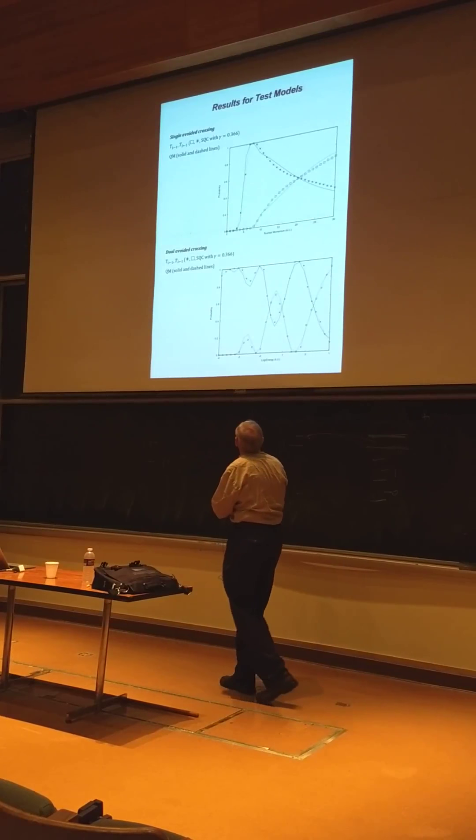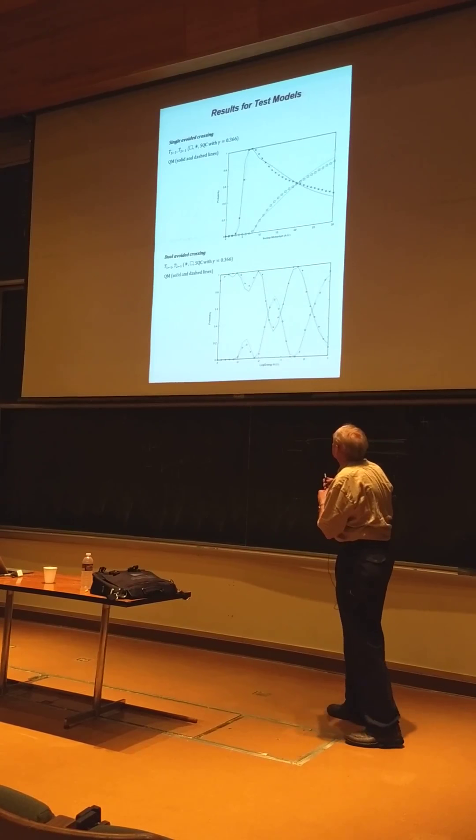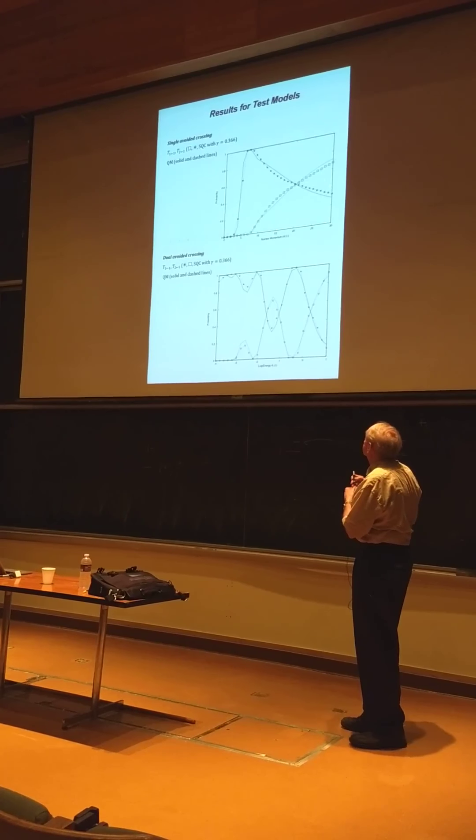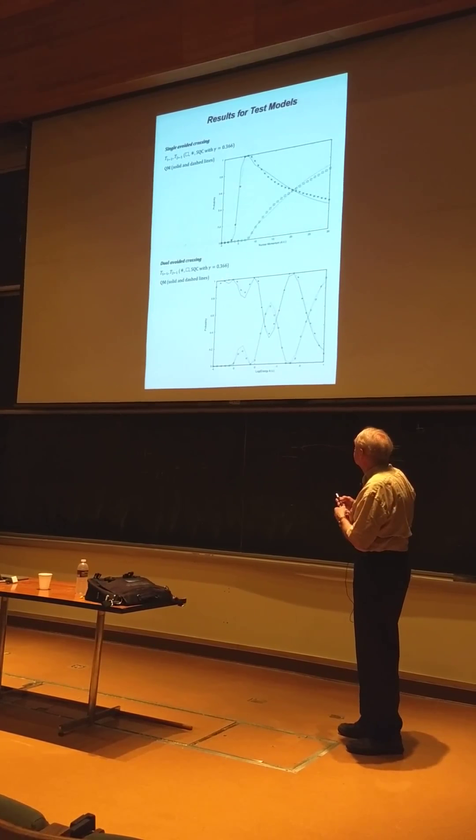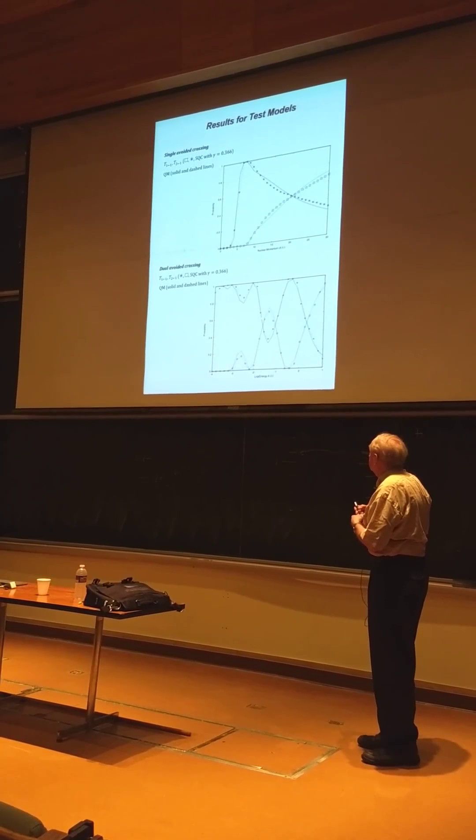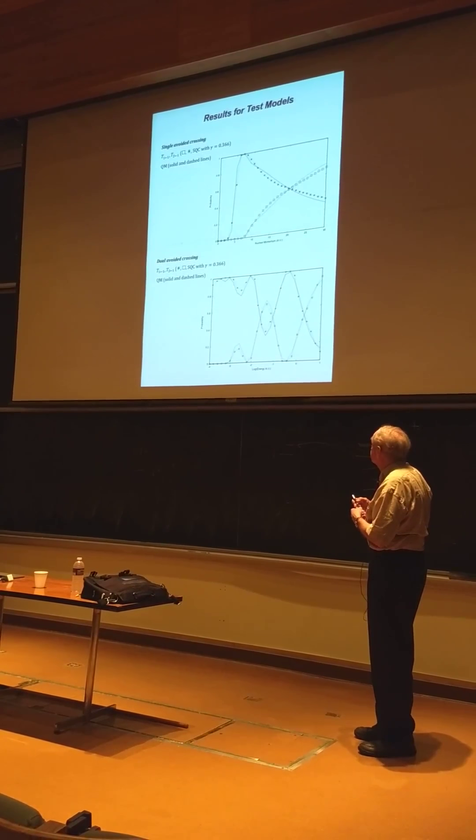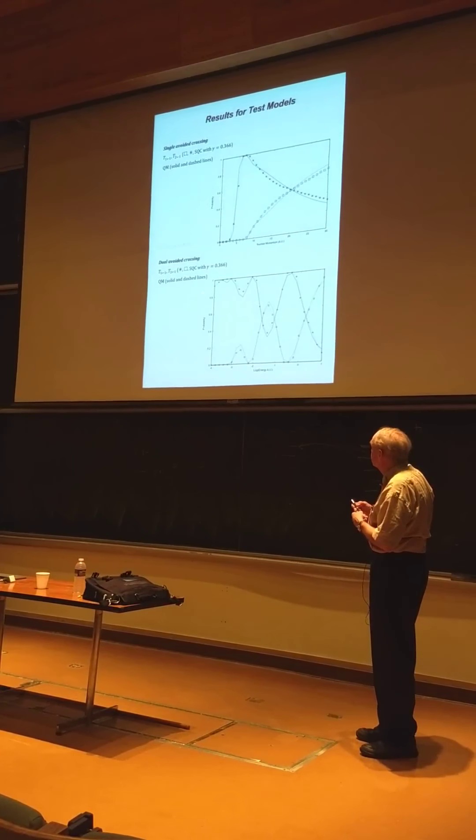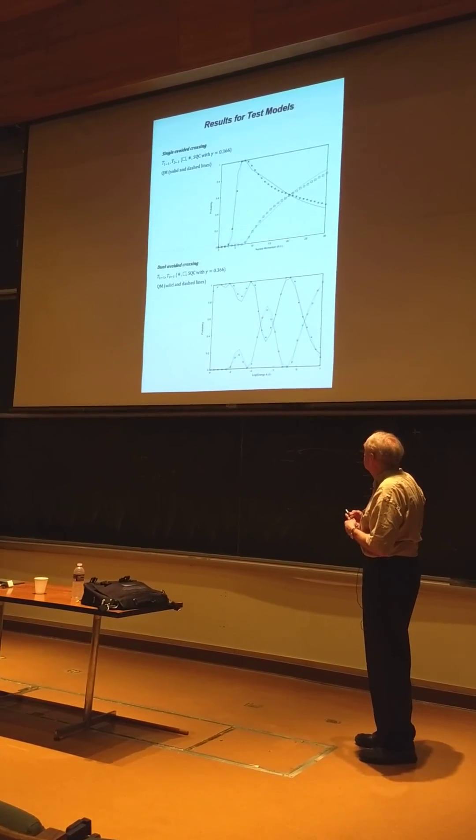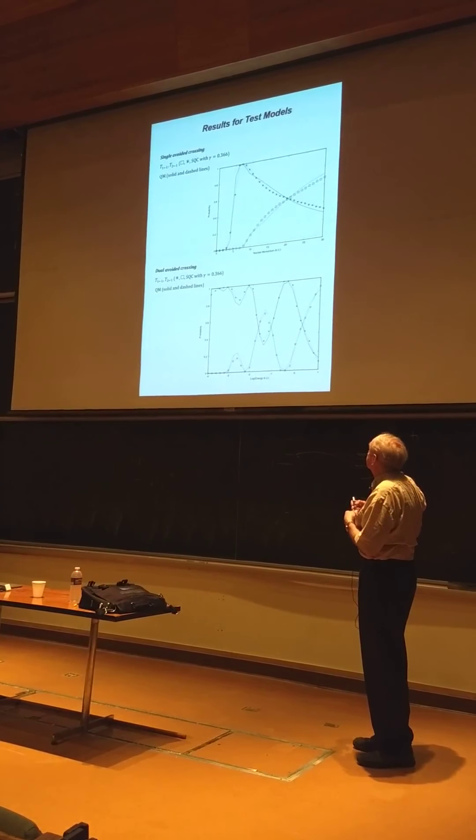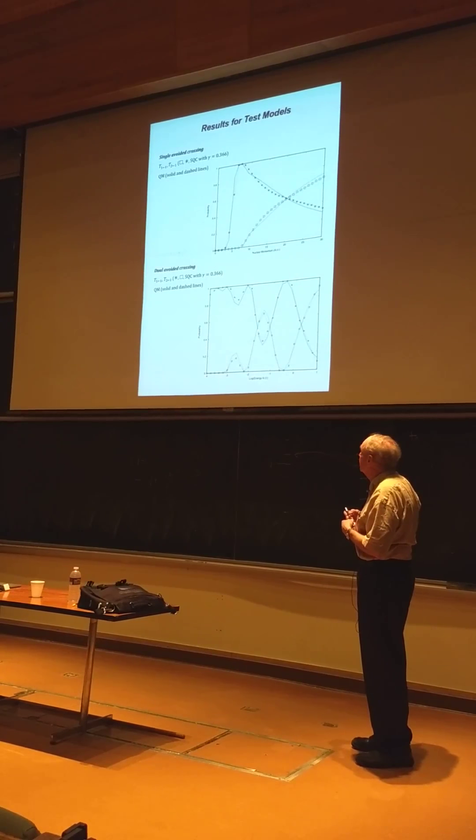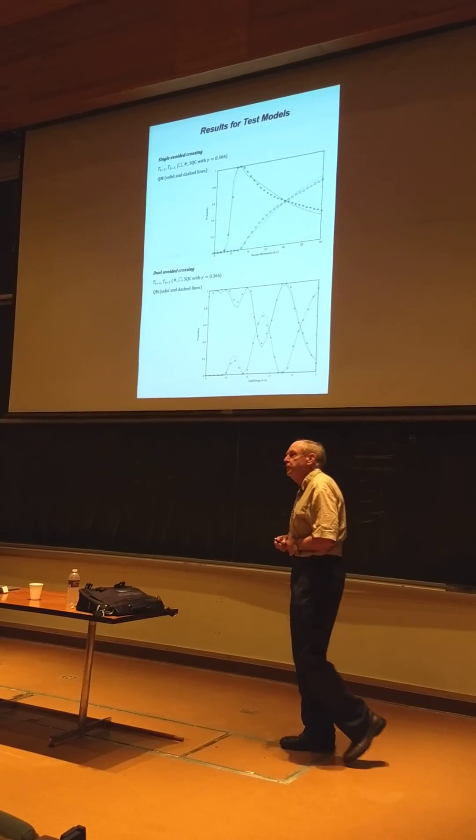One other possibility that comes to mind is the proper quantum value for s-squared. A half times a half plus one, three quarters, root of three over two minus a half, 0.366. So I said, Steve, that's our only choice for gamma. It's 0.366. So all of the results I'll show you probably will be with that choice for gamma. So here's the single curve crossing problem compared to the quantum results.